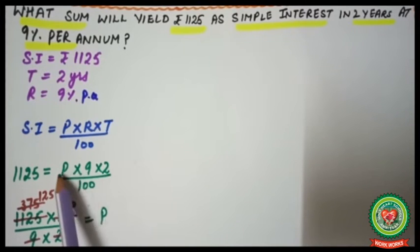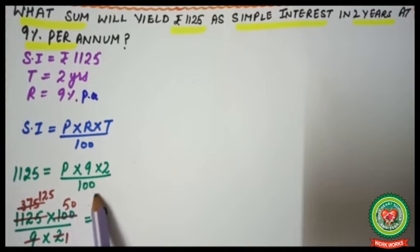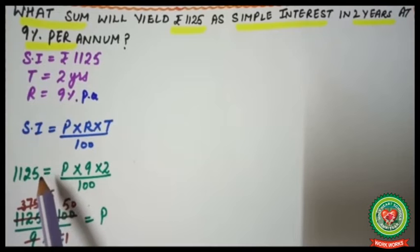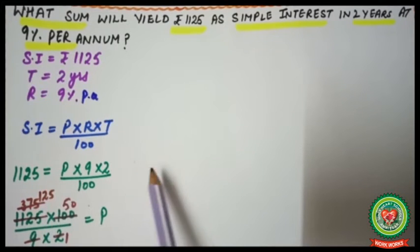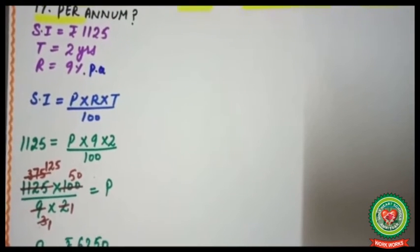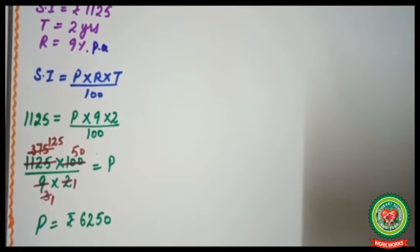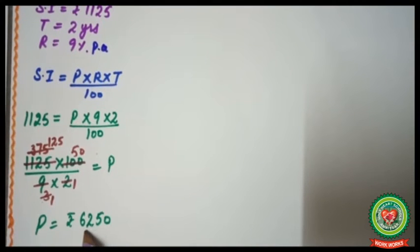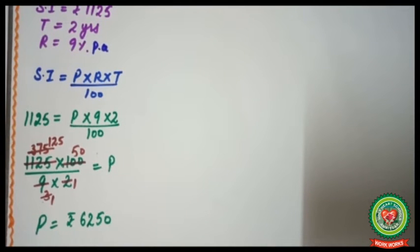We shift 100 to the left side where it multiplies with 1125, and shift 9 × 2 to the left side where it divides. After doing the cancellation we get 125 × 50, which equals rupees 6250. So the principal is rupees 6250.